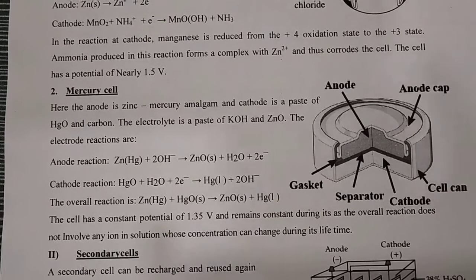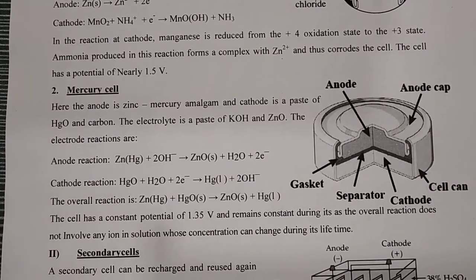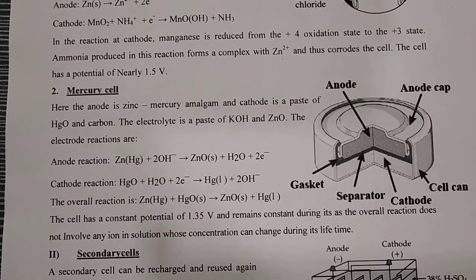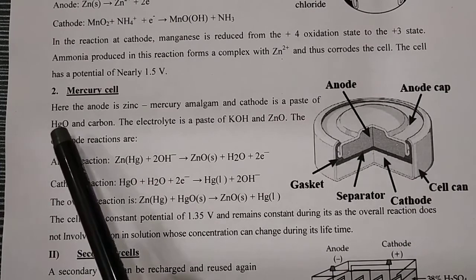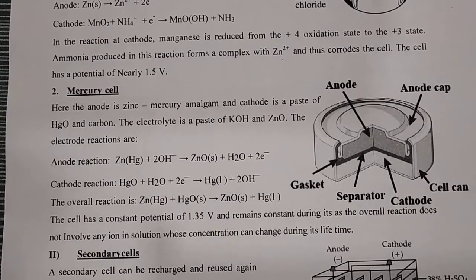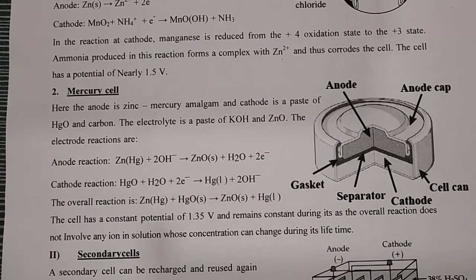The second primary cell is the mercury cell. The other part is a paste of HgO and carbon which acts as cathode.